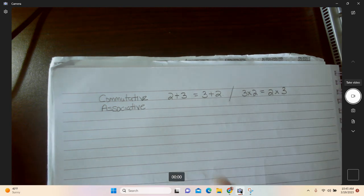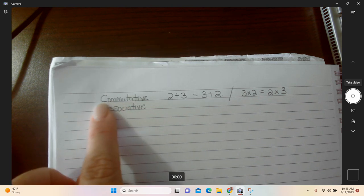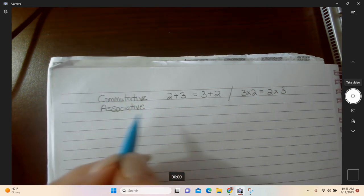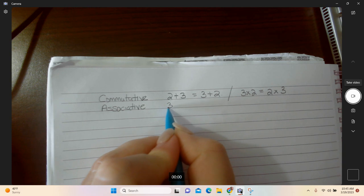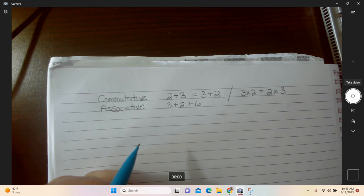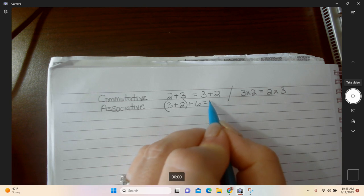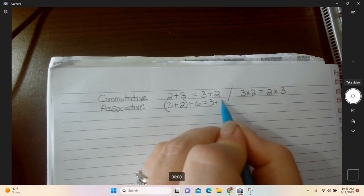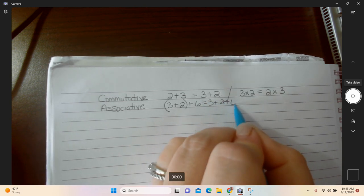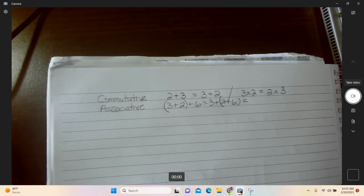Now the thing about associative is just kind of what you see in there, associate. It's who you associate with. Let's say you had a longer expression like three plus two plus six. It doesn't matter whether you do the three plus two first or whether you do the two plus six first. So you can put your parentheses anywhere as long as you're just adding and it doesn't matter. You'll still get the same value for your expression.